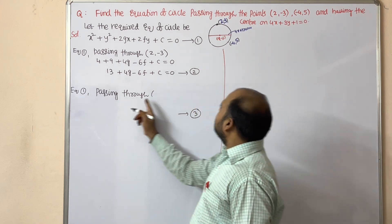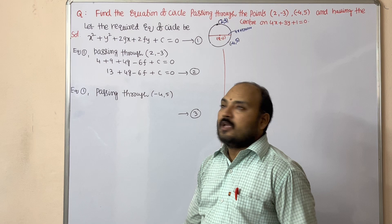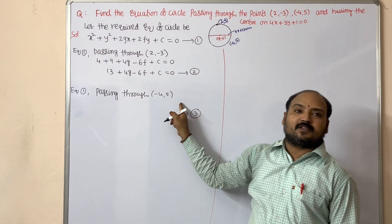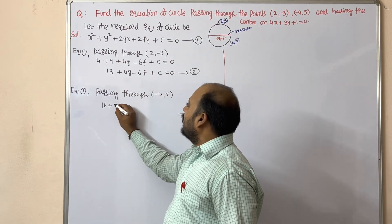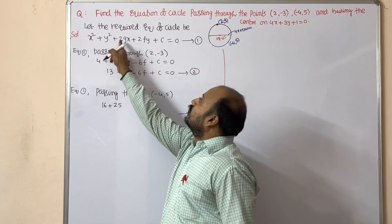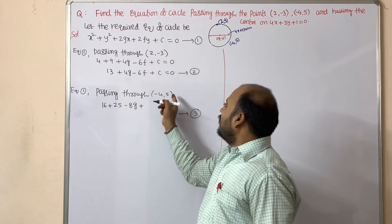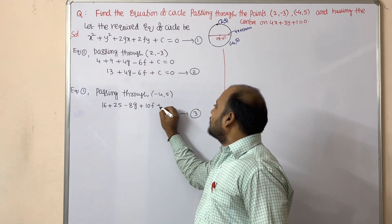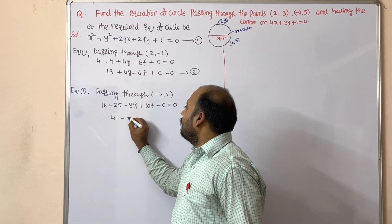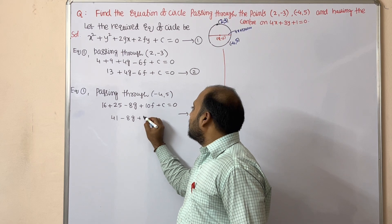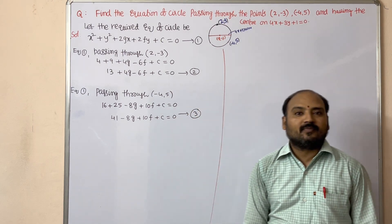For equation 1, the circle passes through the second point (-4, 5). Substituting x = -4, y = 5: (-4)² + 5² + 2g(-4) + 2f(5) + c = 0, giving 16 + 25 - 8g + 10f + c = 0, so 41 - 8g + 10f + c = 0.